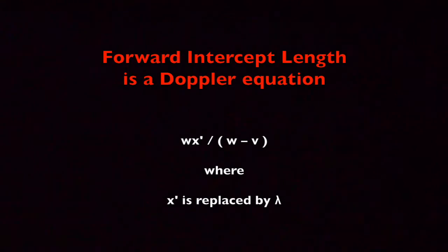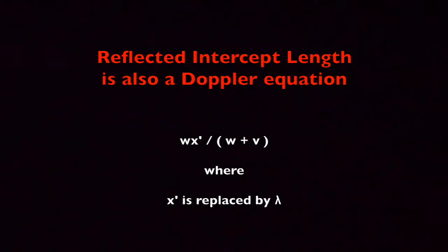Now we can use the length and time equations we just developed. Before I wrap up, notice that the forward segment length is actually one of the Doppler equations, and the reflected segment length is the other. All that's required is to replace x prime with lambda, which is the symbol that's used in math and science to represent wavelengths.